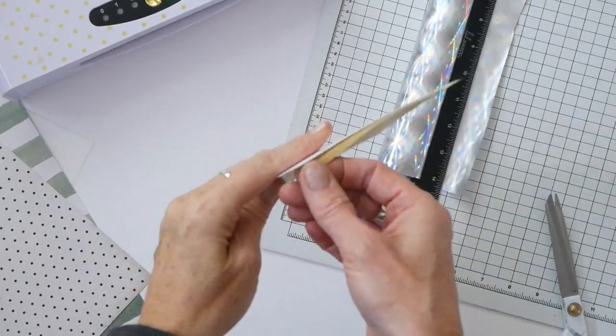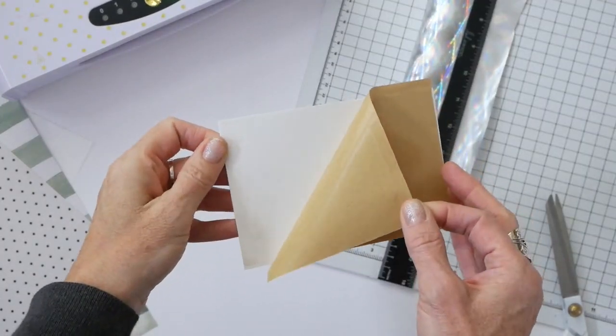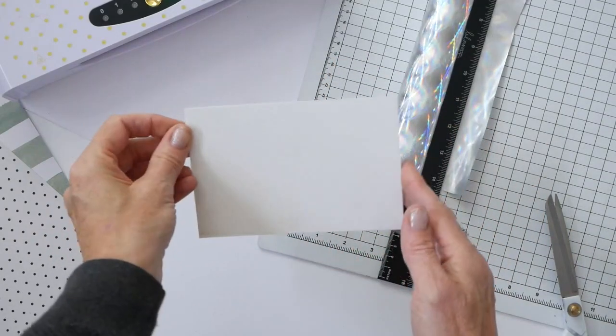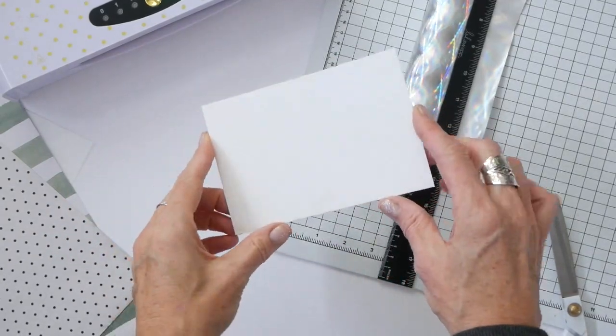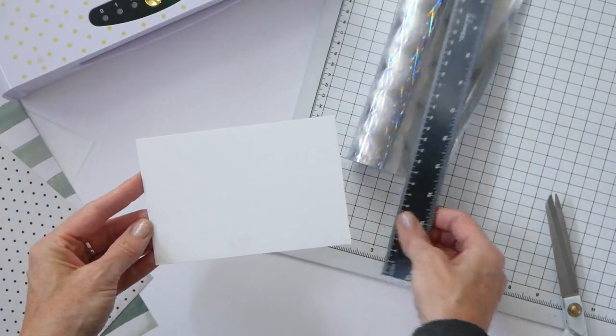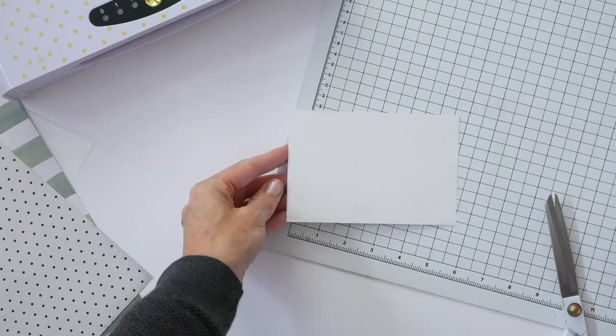I'm going to go ahead and peel back this brown backer as I've already adhered a sheet of adhesive to this cardstock. So this whole entire part of the cardstock is very sticky. Let me give myself a little bit of room here.